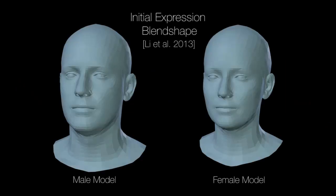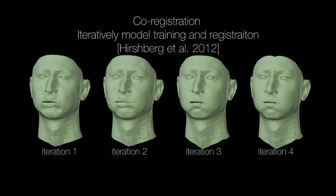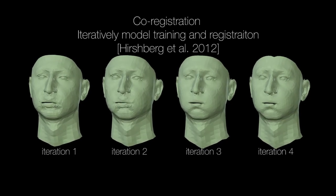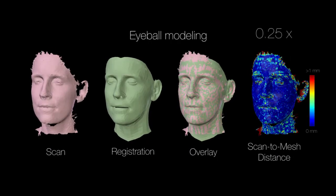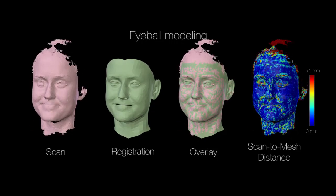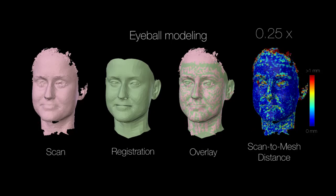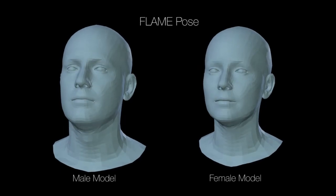We learn FLAME iteratively. To initialize our model, we begin with artist-generated expression blend shapes. The learned model then diverges from these. Given an initial FLAME model, we fit it to a scan sequence and solve for new alignments that are regularized by the model. With improved alignments, we retrain FLAME. We repeat this process to obtain a high-quality co-registered model and set of aligned meshes. Note that FLAME includes eyes, in contrast to standard models that leave the eyes as holes in the mesh. We found that explicitly modeling the eyes improves the quality of the mesh registration around the eyelids, and also helps with the estimation of blinking deformations.